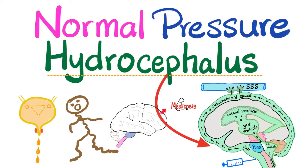In previous videos, we talked about neuroanatomy and neurophysiology, as well as neuropharmacology. Then we started talking about diseases or pathology. We talked about the levels of consciousness and the Glasgow Coma Scale, strokes whether ischemic or hemorrhagic, multiple sclerosis and Guillain-Barré syndrome, myasthenia gravis and Lambert-Eaton myasthenic syndrome, cerebral abscess and the intracranial pressure, intracranial hypertension and brain herniation. The last video was about hydrocephalus in general.